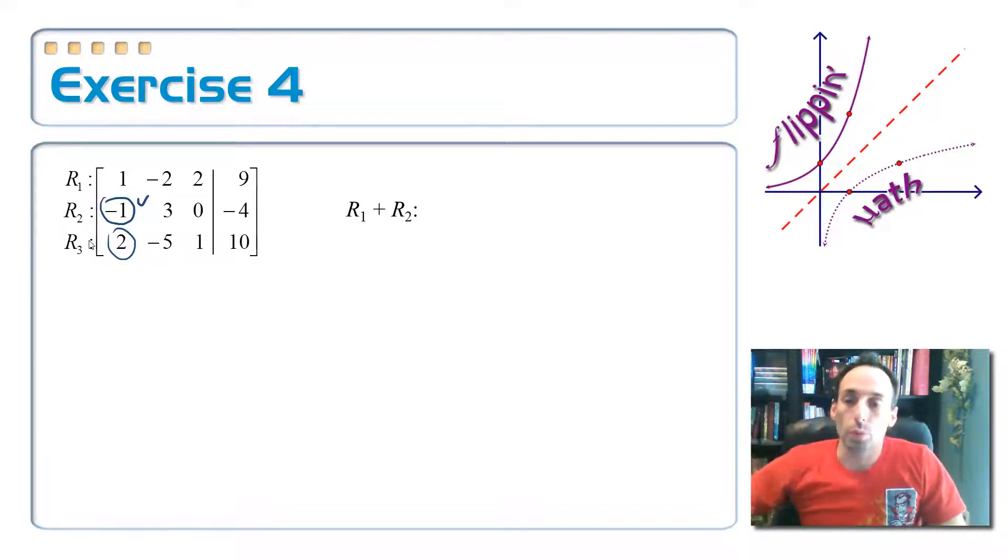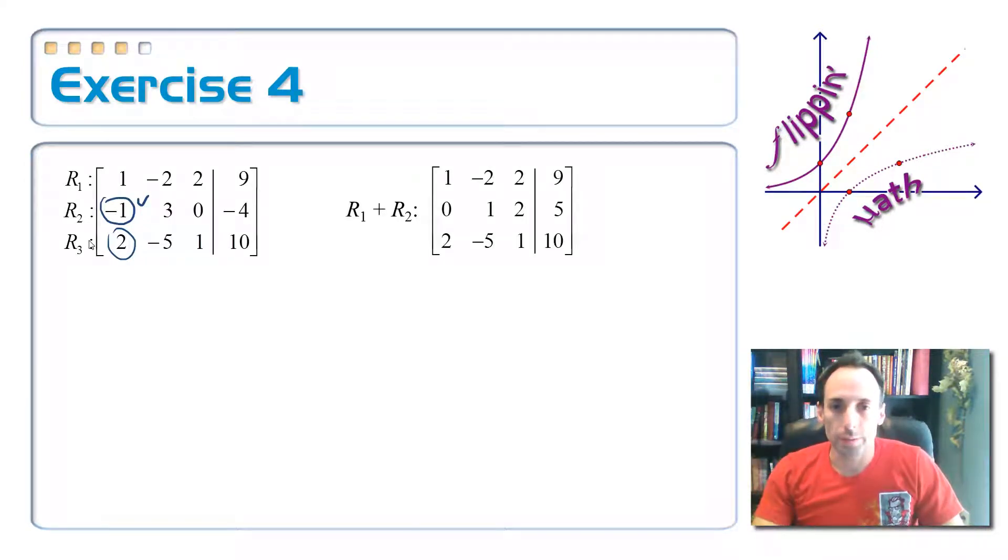Row 1 stays the same. Row 3 stays the same. But my new row 2 is going to come from adding up the top two rows. So, 1 and negative 1 is 0. Negative 2 plus 3 is 1. 2 plus 0 is 2. And 9 minus 4 is 5.